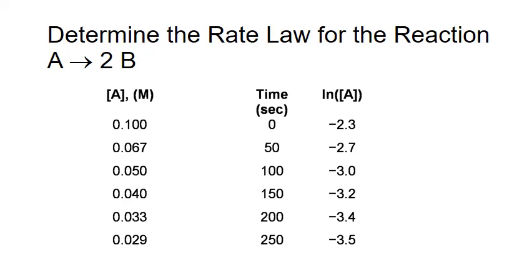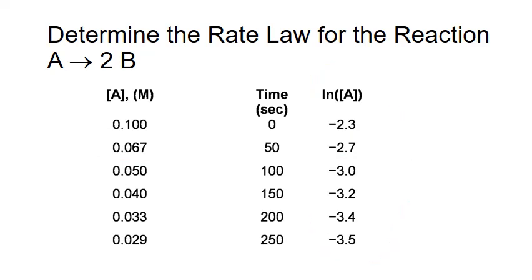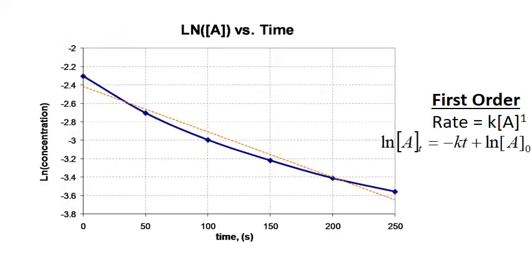So let's try the first-order relationship next. We'll add another column to our data set — the natural log of all of our concentration values. The natural log of 0.1 is negative 2.3, the natural log of 0.067 is negative 2.7, and so forth. Now we plot this data with the natural log column as our y and the time column as our x. The blue line is our actual data plotted as the natural log of concentration versus time, and the red dashed line shows what a straight line should look like. Again, the data doesn't fit the straight-line relationship, so this is not a first-order reaction either.